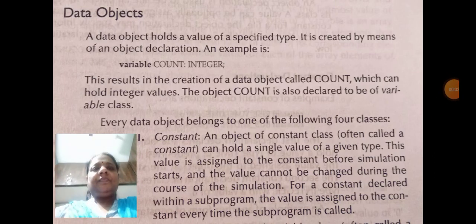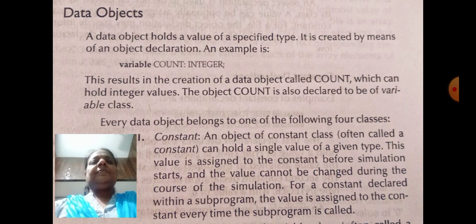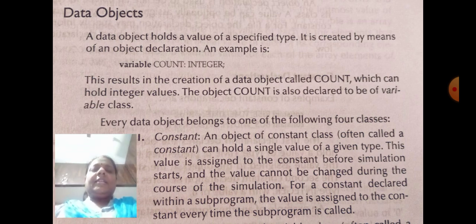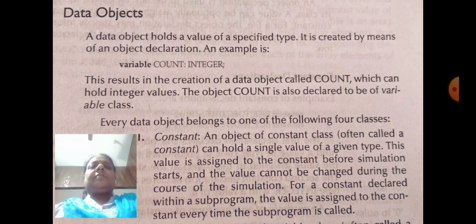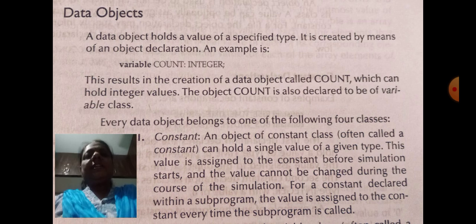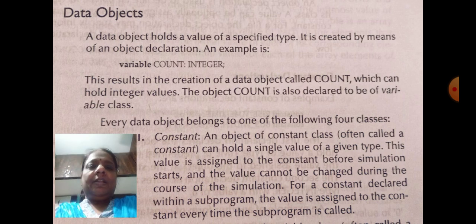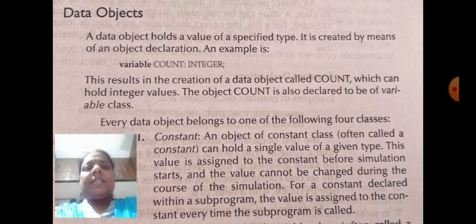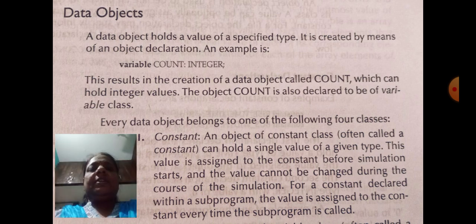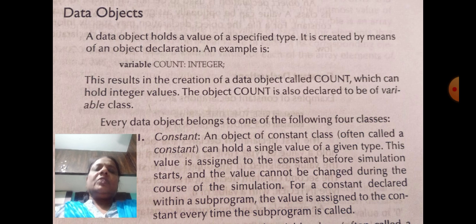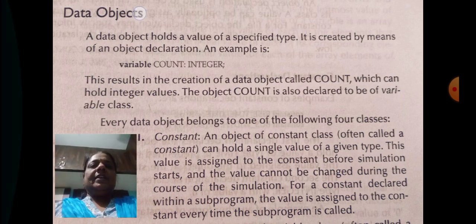Hi, my dear students. Today we are going to study data objects. Data object is basically a VHDL element. In the last video we studied the different types of basic elements available in VHDL. There are 4 basic elements: identifiers, data objects, data types, and operators. In the last class we studied the identifiers. In this class we are going to study the data objects.